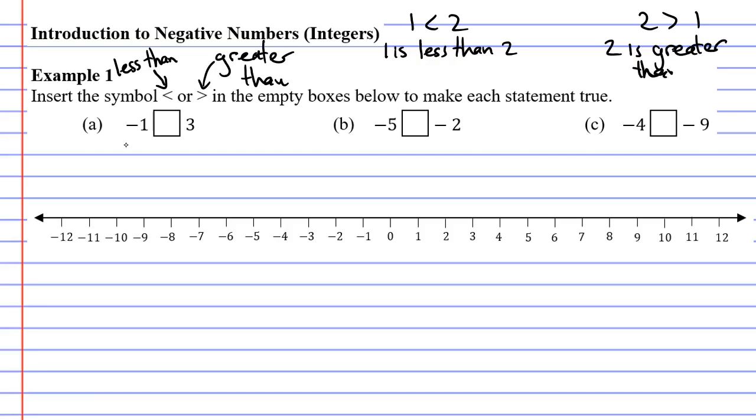So, we're going to apply this to some negative numbers. Alright, so which one is the greater number, the negative one or the three?